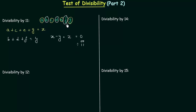If Z is equal to 0 or it is divisible by 11, then we can say that the number A, B, C, D, E, F, G is also divisible by 11.